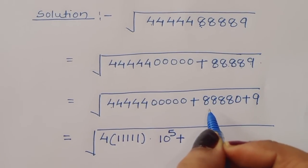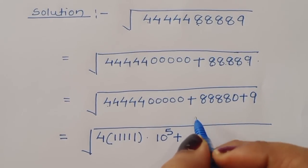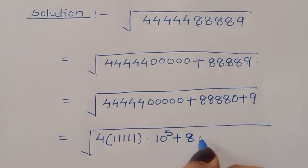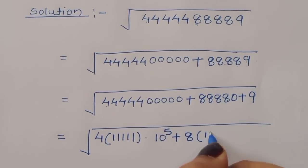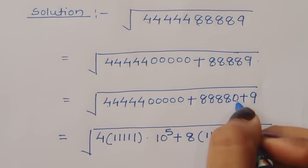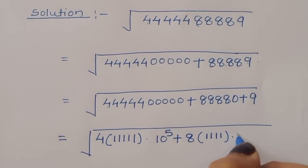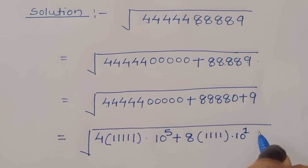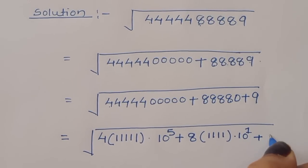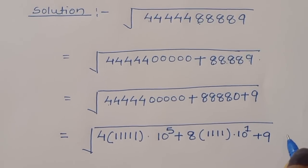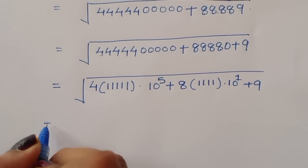Again here we can take common 8, so when we take common 8, we get 1234 and this we can write as 10 raise to 1, so 10 raise to 10 raise to... and 9 plus 9 is equal to.